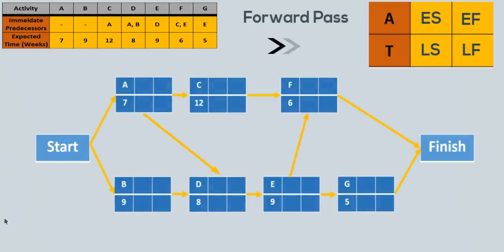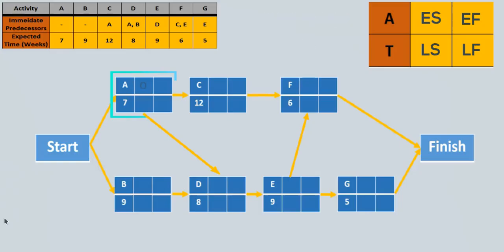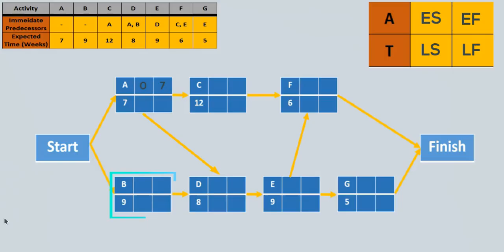Let's do the forward pass. A has no predecessors, so its earliest start time will be 0. Since it has 7 weeks to be completed, its earliest finish time will be 0 plus 7, which gives 7. B also has an earliest start time of 0, and with an activity time of 9, it will have an earliest finish time of 9. Now C needs A to be completed before it can start. Since the earliest finish time for A is 7, the earliest time C can start is 7.